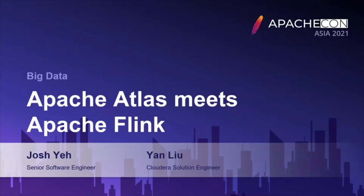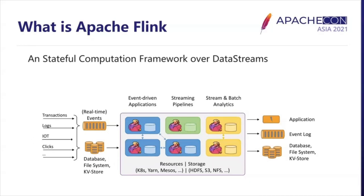For those who have not heard of Apache Atlas or Apache Flink before, don't worry. Let's take a look at what they are. For those not familiar with Apache Flink, here is a short and generalized description. Apache Flink is a stateful computation framework over data streams, where data streams not just means real-time stream data, but also includes historical data, which can be treated as a special case of data streams.